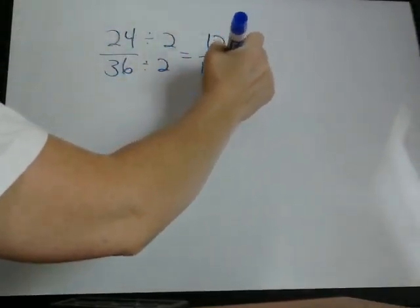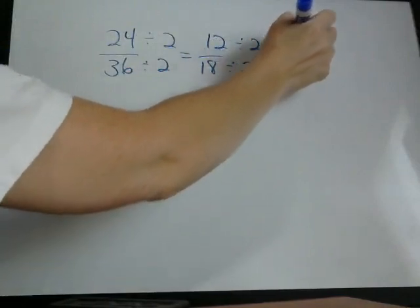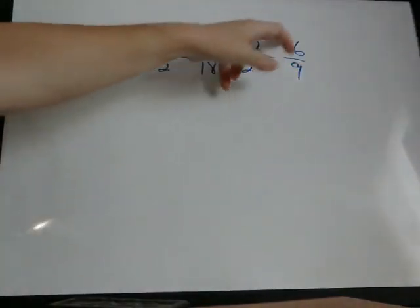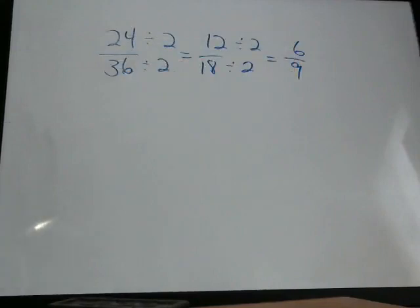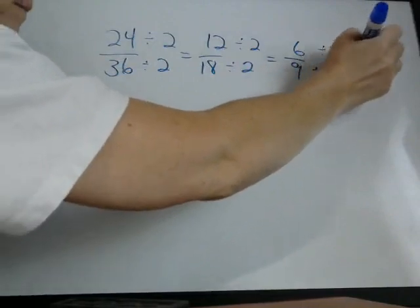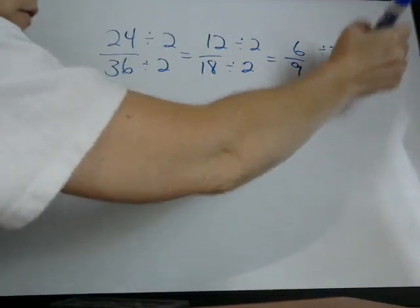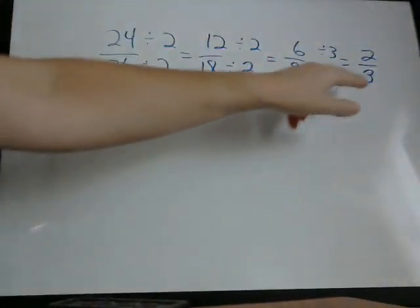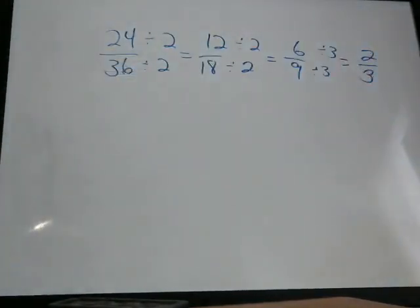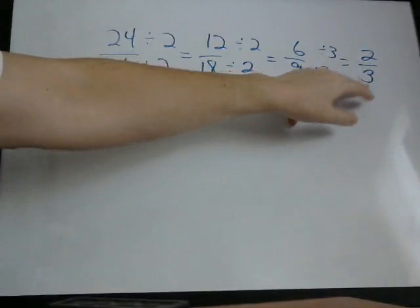So we'll divide this by 2. Well, both 6 and 9 can be divided by 3 evenly. So we'll divide by 3, and we end up with 2 thirds. Now there is no number that can evenly be divided into 2 and 3, except for 1, but 1 doesn't count, so this is lowest terms.